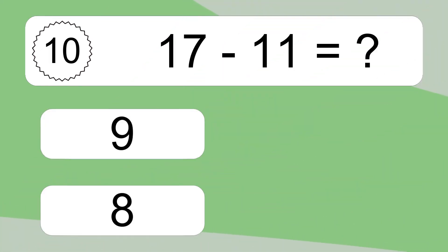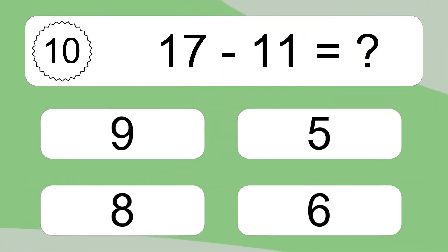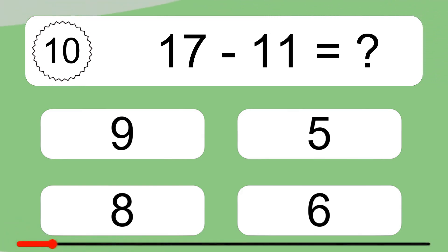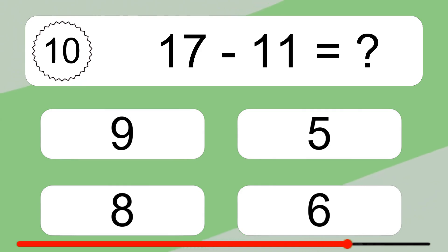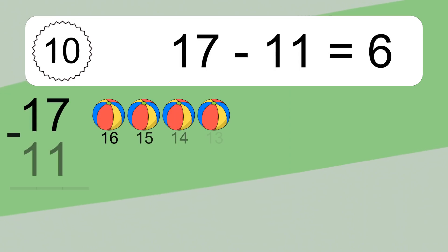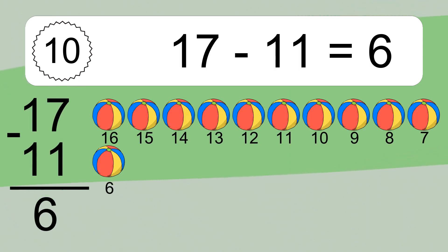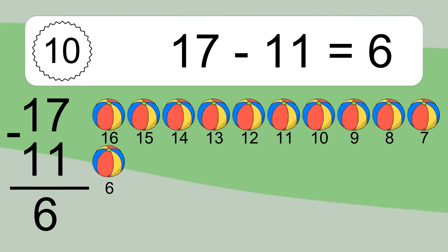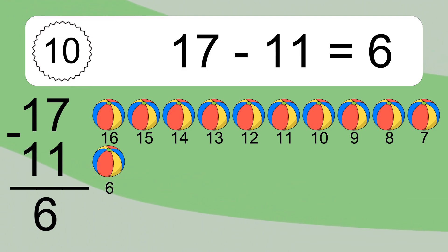17 minus 11 equals what? 17 minus 11 equals 6. Let's count it: 16, 15, 14, 13, 12, 11, 10, 9, 8, 7, 6.